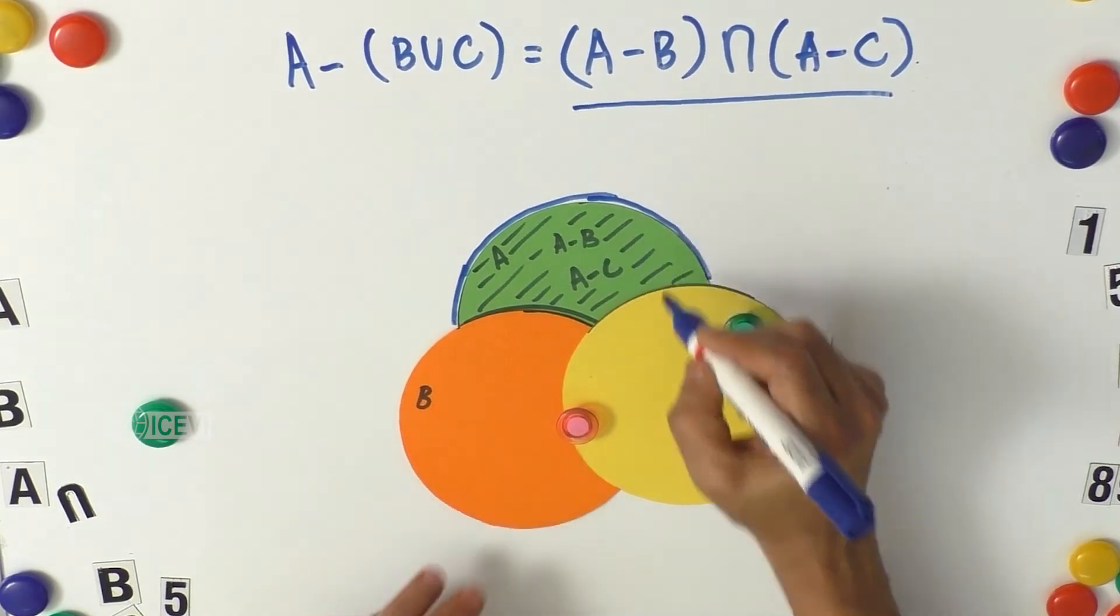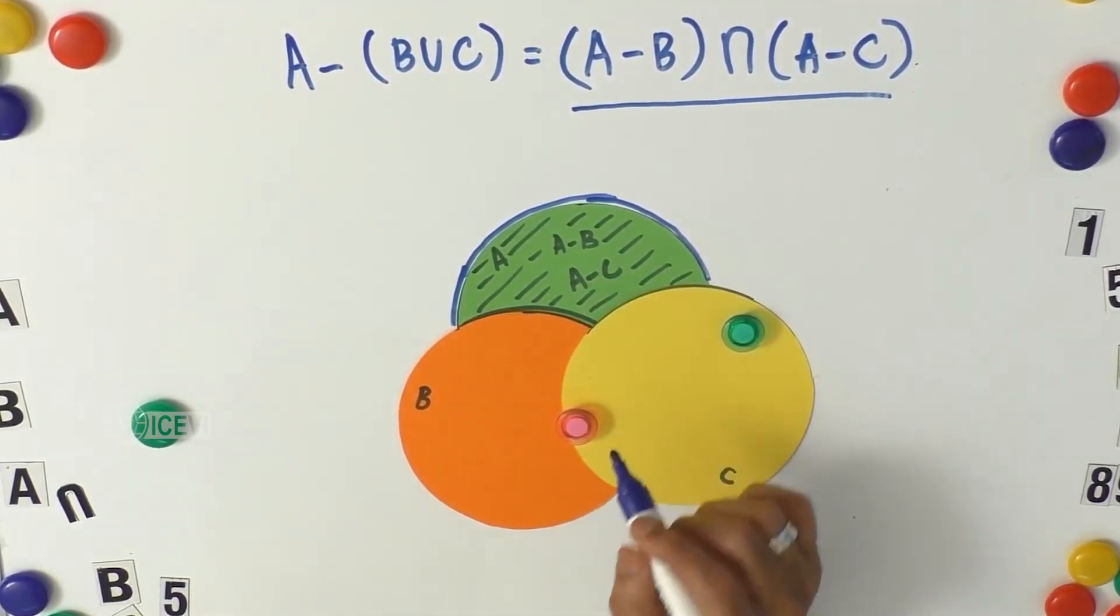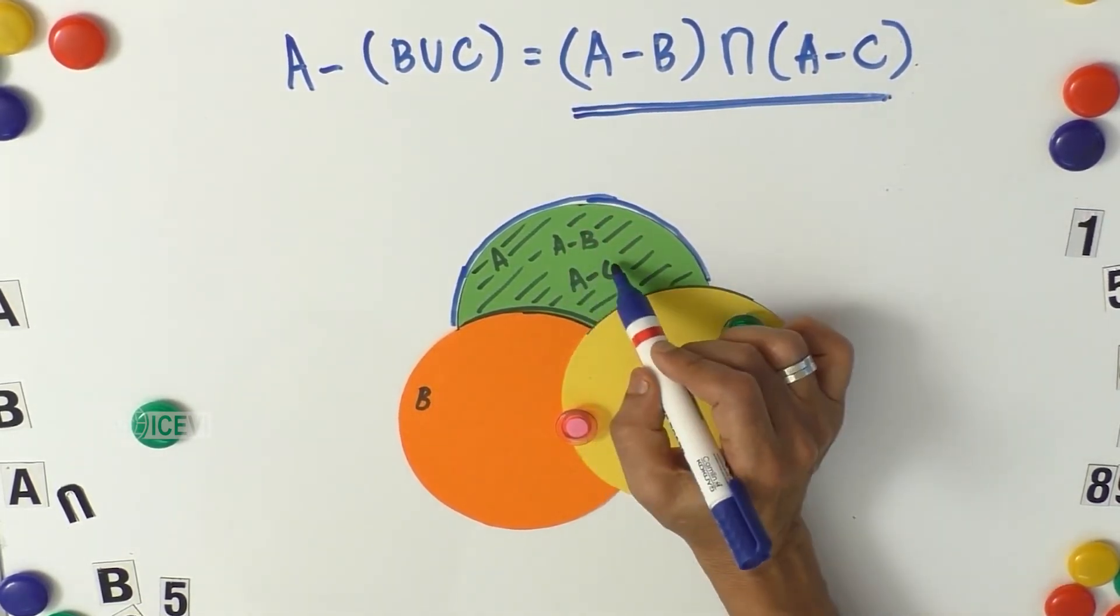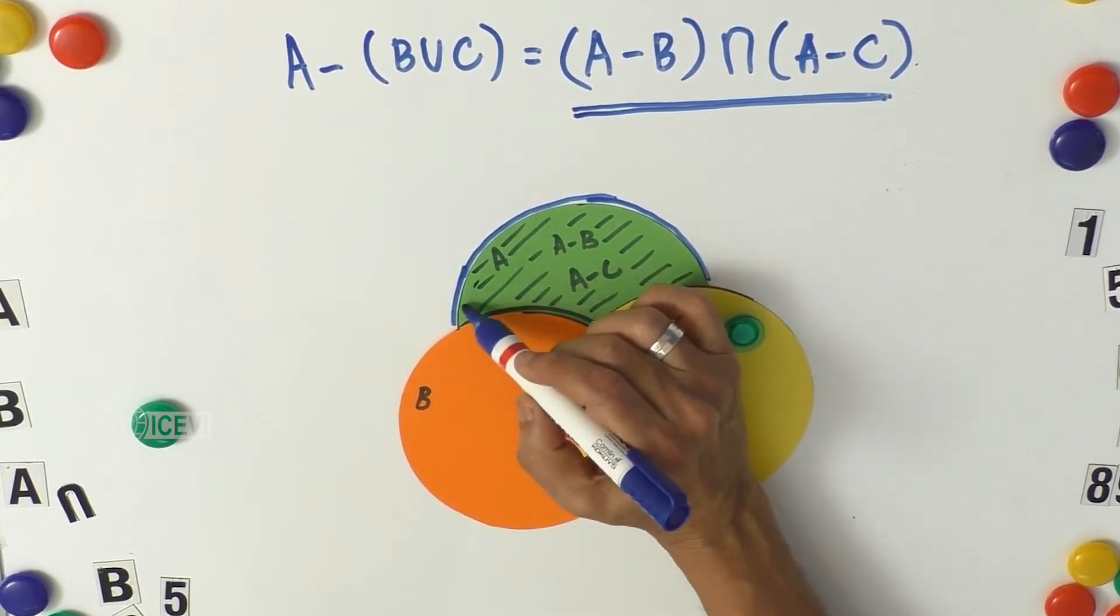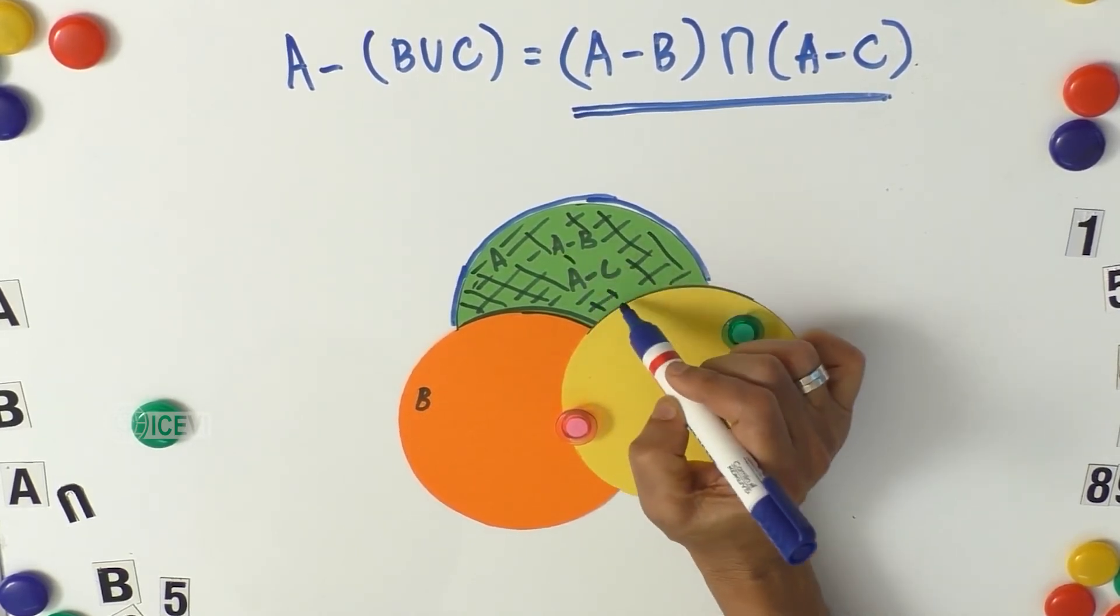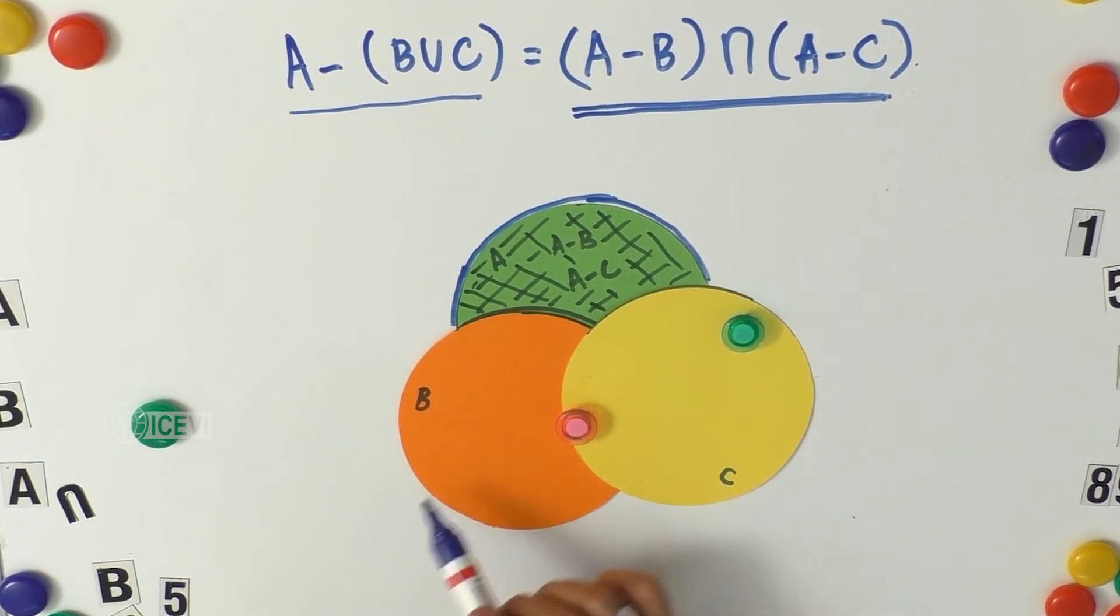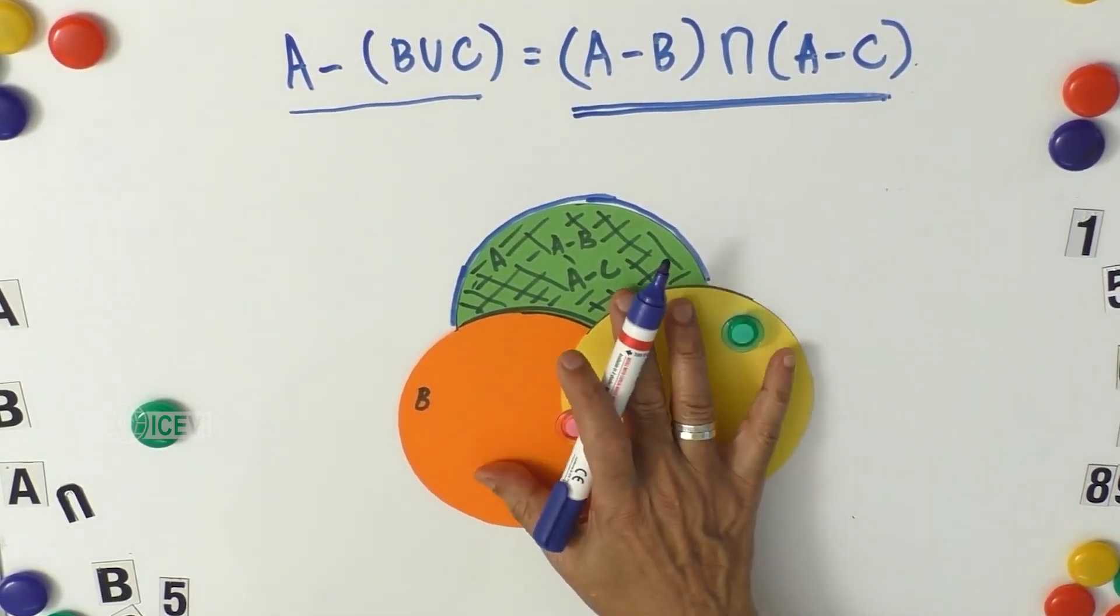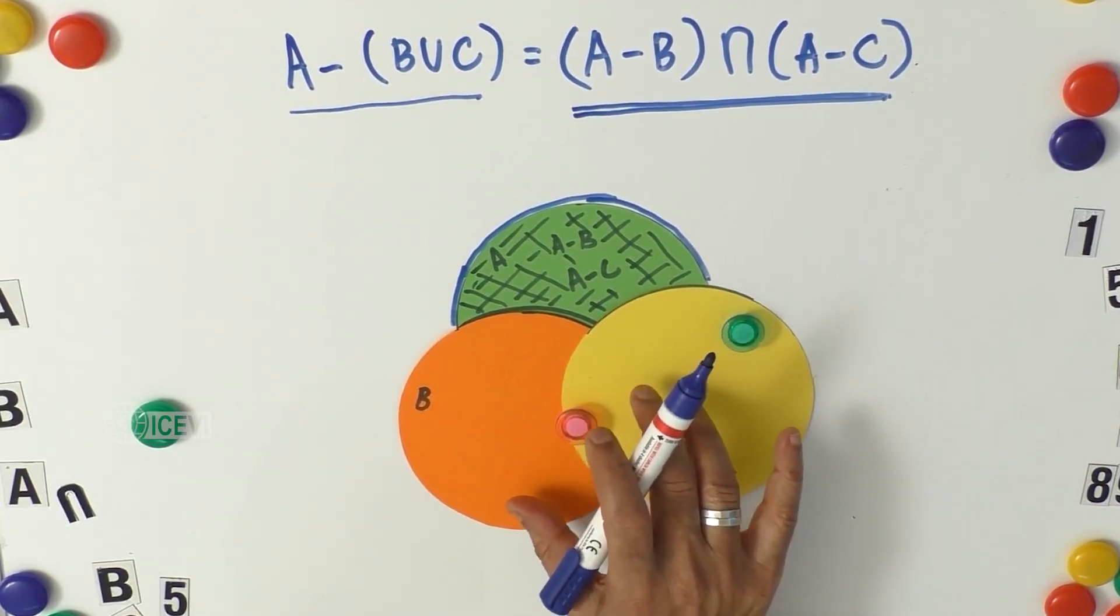So this is A minus B union C. We have proved that A minus B intersection A minus C is this portion, and again it comes as the portion which is nothing but A minus B union C. So this is one of the De Morgan's law on set difference.